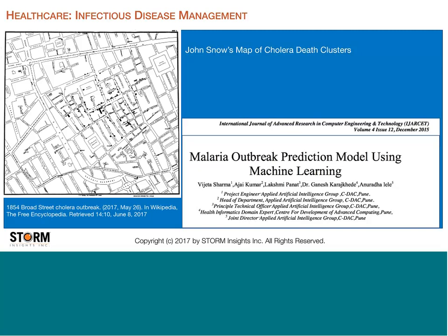For infectious disease management, the contrast between John Snow's 1854 cholera death cluster map of London and a December 2016 machine learning prediction model for malaria illustrates the shift from descriptive to predictive analytics. Snow's map was effective in helping visualize the issue and ultimately identify the contaminated water pump — but it was descriptive, not predictive. Now, using machine learning with the same concept, we're starting to be able to predict disease transmission.